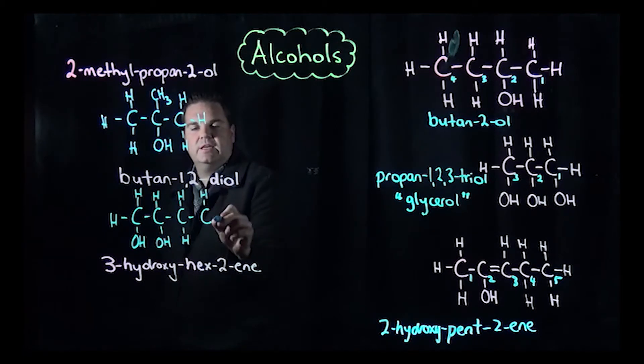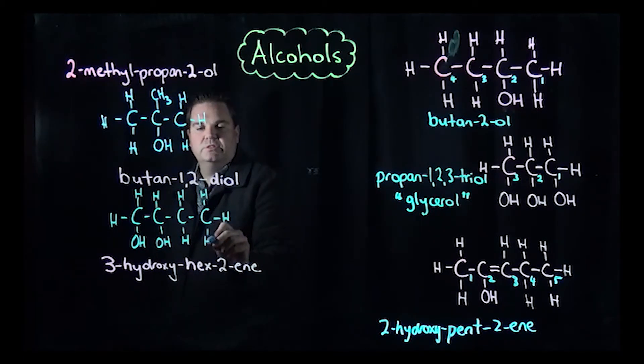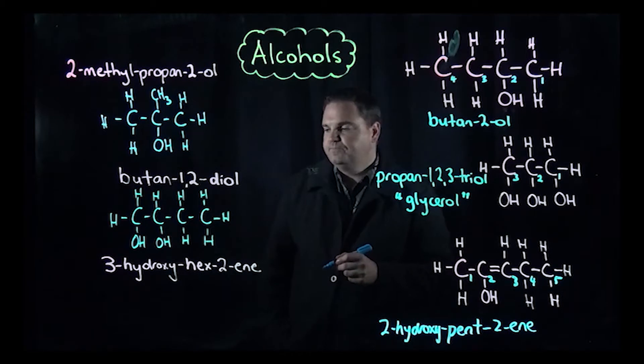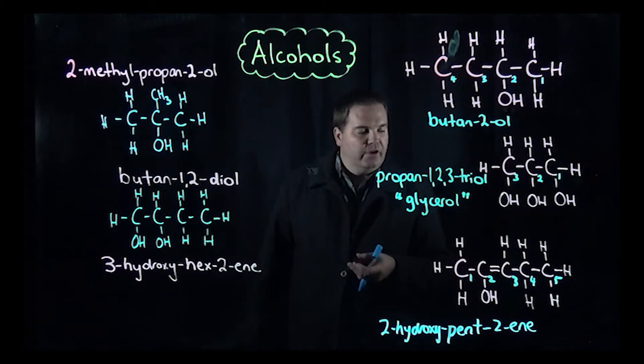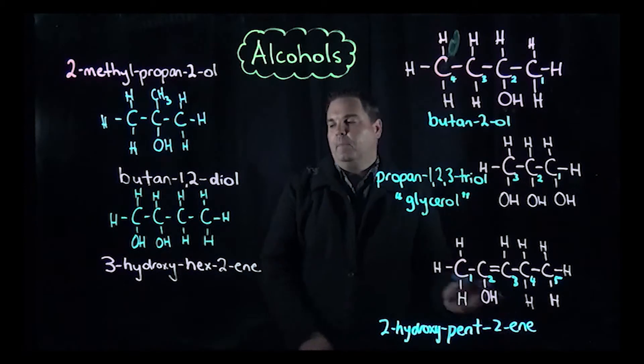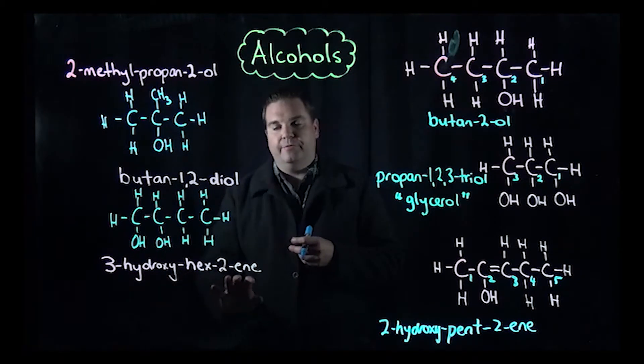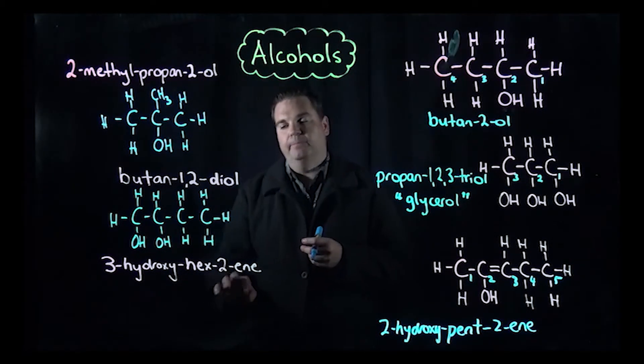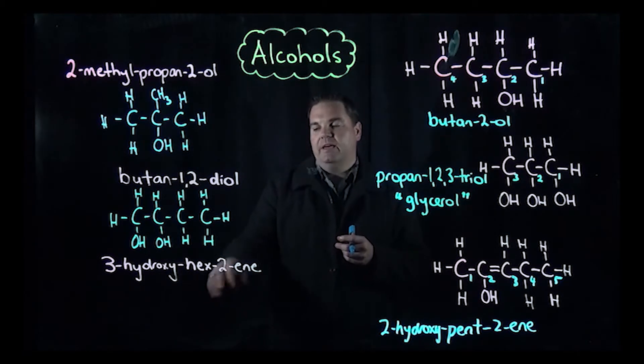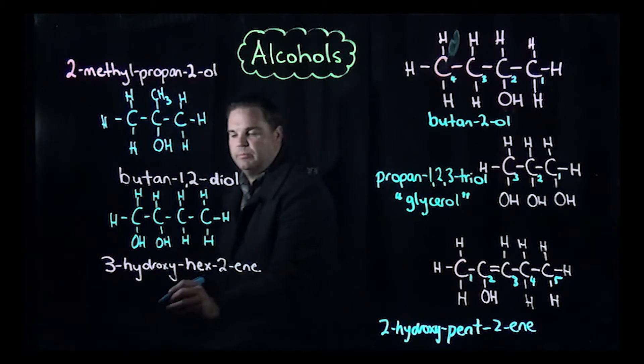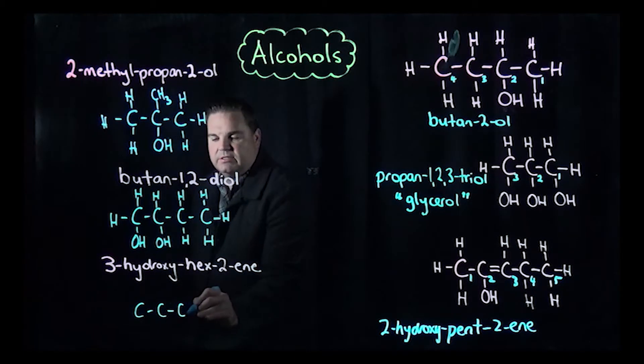The final one is another example like we had over here, where we've got the alcohol functional group out the front because there's another functional group that takes preference. Hex is six carbon atoms, so we put in our six carbon atom chain like this.